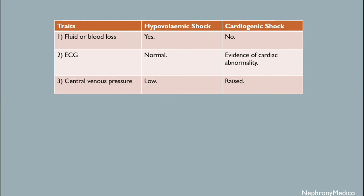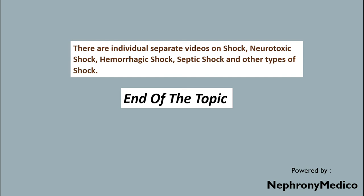The ECG is normal in hypovolemic shock, whereas there is evidence of cardiac abnormality in cardiogenic shock. Central venous pressure is low in hypovolemic shock, while it is raised in cardiogenic shock. End of topic.